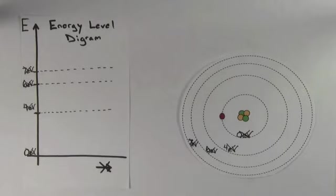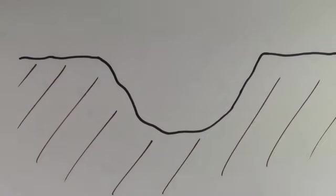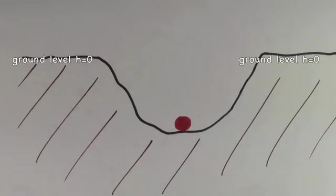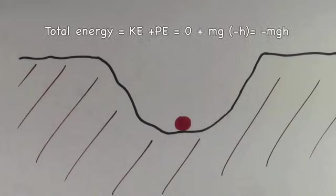Anything that's bound to something else will have total energies that are negative. This is analogous to a ball stuck at the bottom of a ditch. If the ball's not moving, it has no kinetic energy. And if we assume that ground level is the h equals zero position, then this ball's going to have a negative gravitational potential energy.